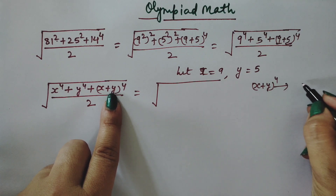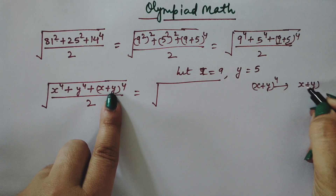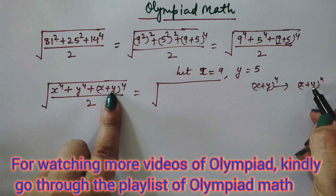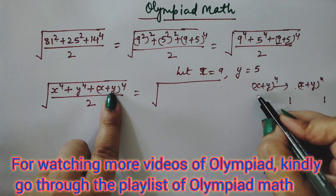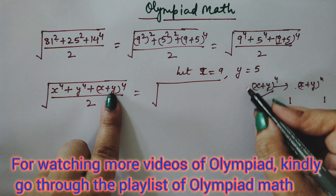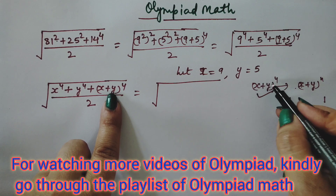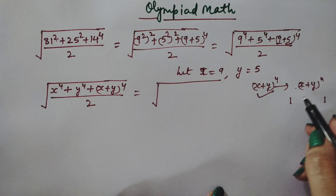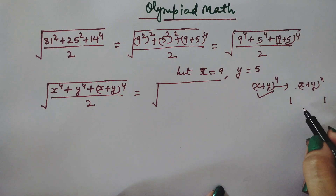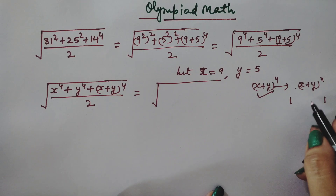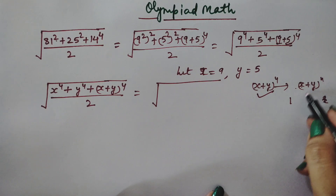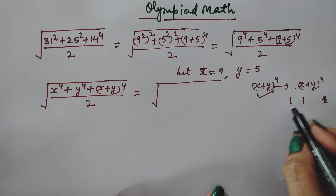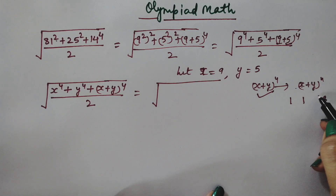This is the standard form of (x+y)ⁿ, where the coefficients of x and y are both 1. To find the binomial expansion, we use the binomial theorem and Pascal's triangle. The coefficients for n=1 are 1, 1.